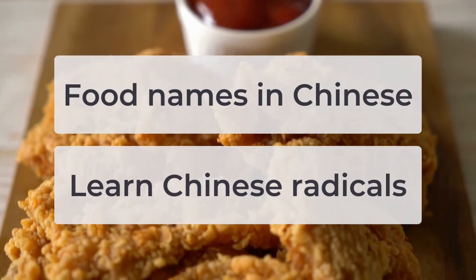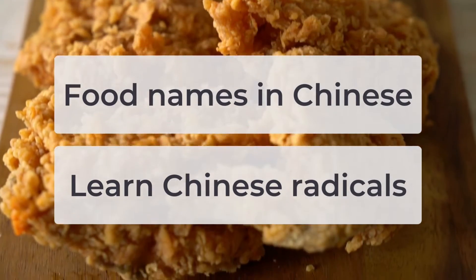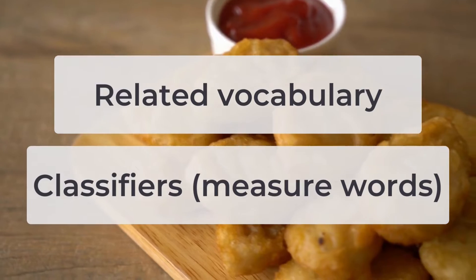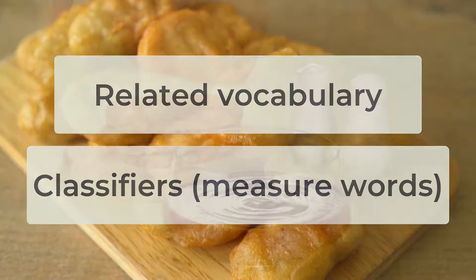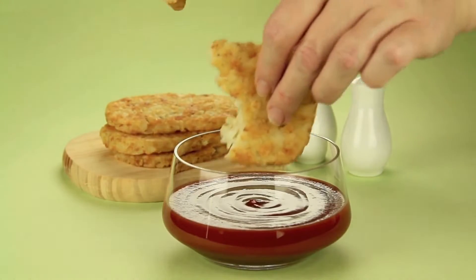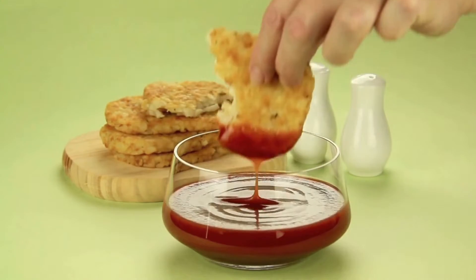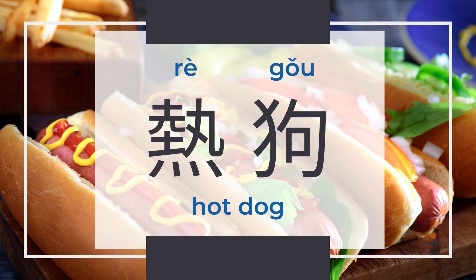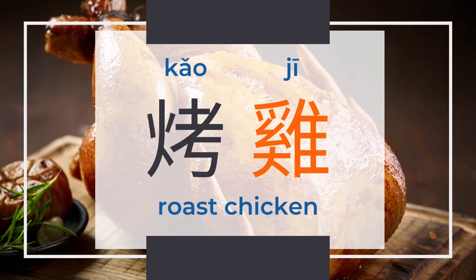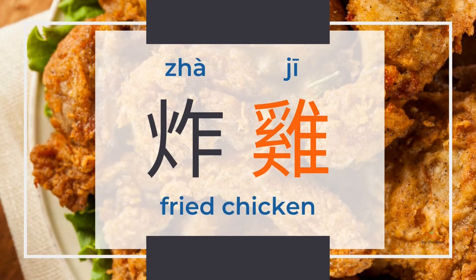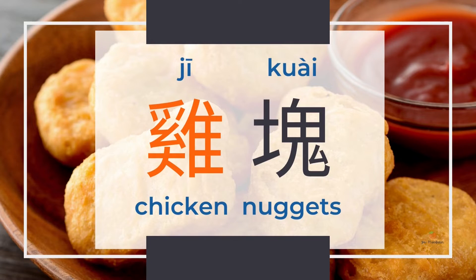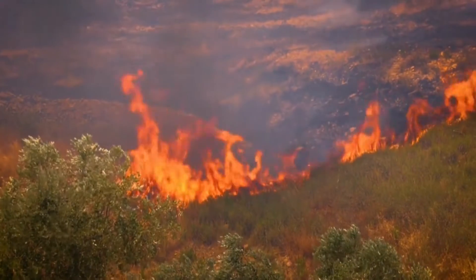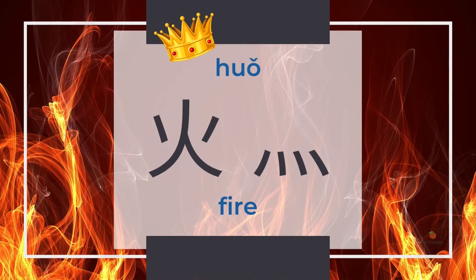You'll learn food names, Chinese radicals, related vocabulary, and classifiers. Learning Chinese radicals together will make the characters easier to remember. The food names we'll cover are: 热狗 (hot dog), 烤鸡 (roast chicken), 炸鸡 (fried chicken), and 鸡块 (chicken nuggets), using nature-related and animal-related Chinese radicals.